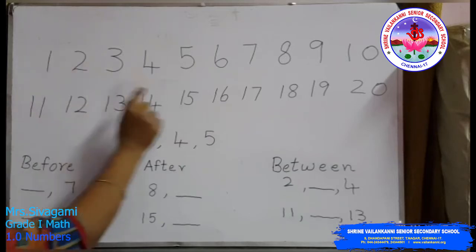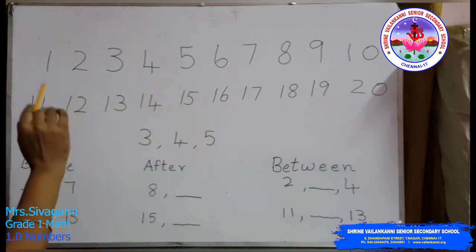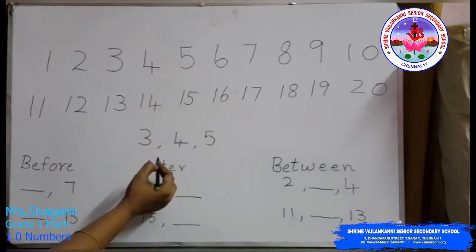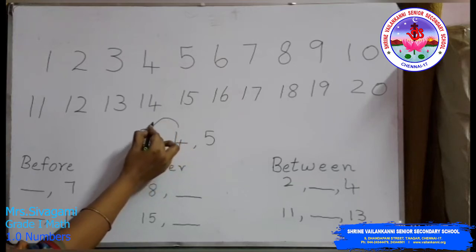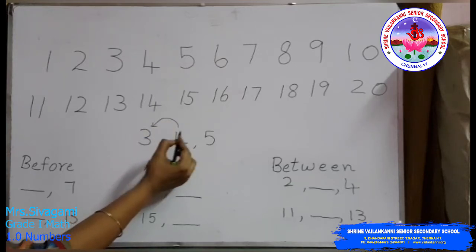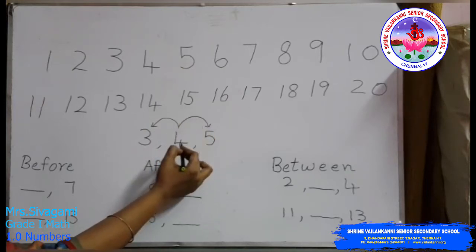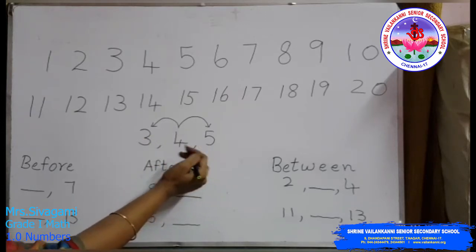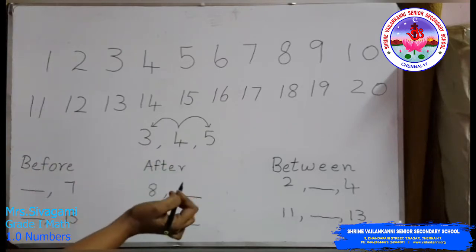Now we are going to see the order of numbers. These are numbers from 1 to 20 — they come in a certain order; one number comes after another. For example, take numbers three, four, and five. Number three comes before four, number five comes after four, and the number four is in between three and five.